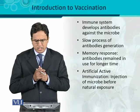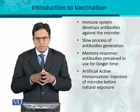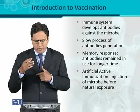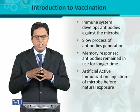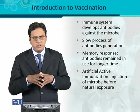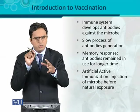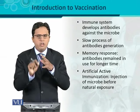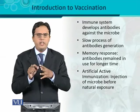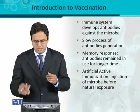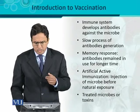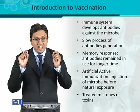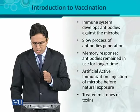Artificial active immunization can be achieved whenever we inject the microbe before natural exposure — meaning there is no natural exposure yet, and before it occurs, if we artificially inject it into the body, the immune system will activate and start to produce antibodies. That is called artificial active immunization. On the contrary, treated microbes or toxins can also be used for active immunization purposes.